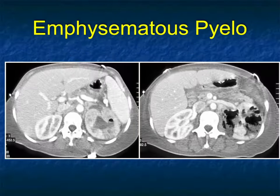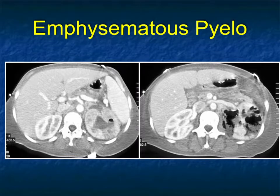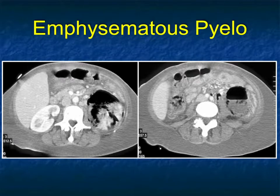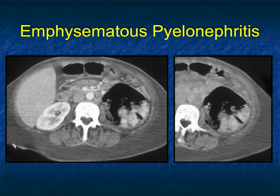Here's a great example of emphysematous pyelonephritis. Look at the destruction of the patient's left kidney — there is still some function present, but most of the kidney is destroyed with lots of air within it. The air goes beyond the kidney into the peri- and perirenal space. This is a surgical emergency. People have tried putting nephrostomy tubes in only because patients are often poor surgical candidates, but this patient would get a left nephrectomy. Here's another example where the left kidney is totally destroyed — this is emphysematous pyelonephritis, almost a pathognomonic diagnosis.